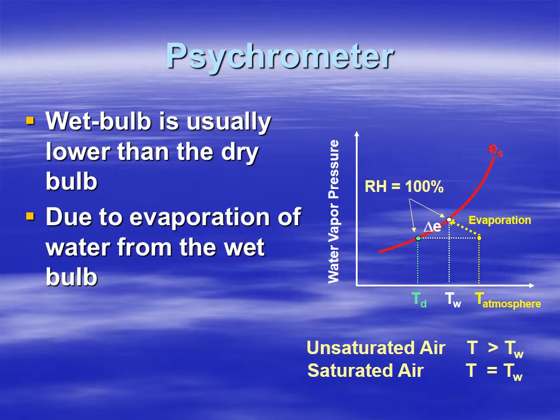The red line represents saturation — once the air is saturated, no more water vapor can evaporate into it. The wet bulb temperature ends up lower than the atmospheric temperature due to evaporation, and the amount of water vapor in the air is greater than what you started with.